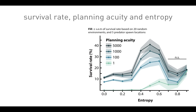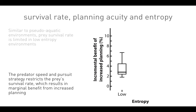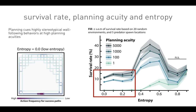Similar to pseudo-aquatic environments, prey survival rate is limited in low-entropy environments. The predator speed and pursuit strategy restricts the prey's survival rate, resulting in marginal benefit from increased planning. The story is disclosed by the action frequency heat map for success paths by the prey — over all trials, the most commonly taken paths are pretty focused on walls and are fairly stereotyped. Planning cues highly stereotypical wall-following behaviors at high planning acuities.